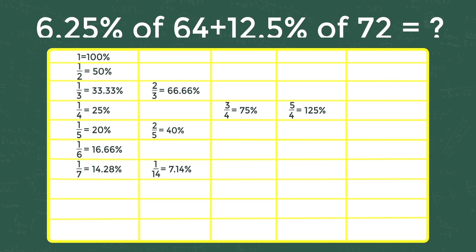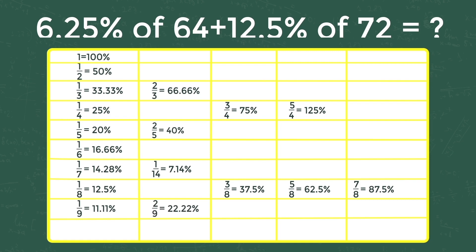Further in the table: 1 by 14 is equal to 7.14 percent, 1 by 8 is equal to 12.5 percent, 3 by 8 is equal to 37.5 percent, 5 by 8 is equal to 62.5 percent, 7 by 8 is equal to 87.5 percent, 1 by 9 is equal to 11.11 percent, 2 by 9 is equal to 22.22 percent, 1 by 10 is equal to 10 percent, 2 by 10 is equal to 20 percent.